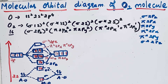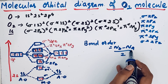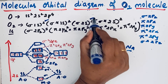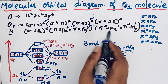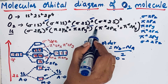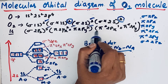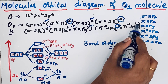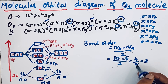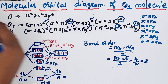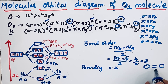This completes the molecular orbital diagram of oxygen molecule. From this we can calculate the bond order. The number of bonding electrons is 10. The number of anti-bonding electrons — from sigma star and pi star orbitals — is 6. So bond order equals (10 minus 6) divided by 2, which equals 2. The bond order of oxygen molecule is 2, meaning there is a double bond in oxygen molecule.